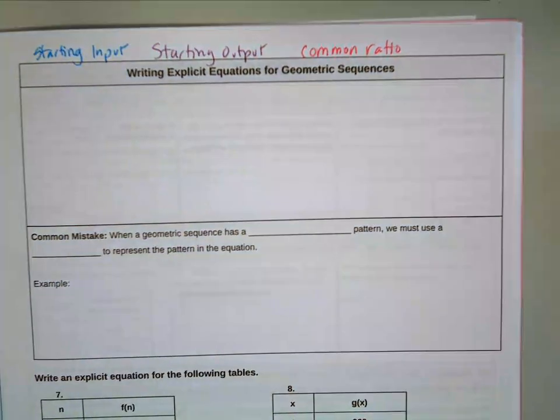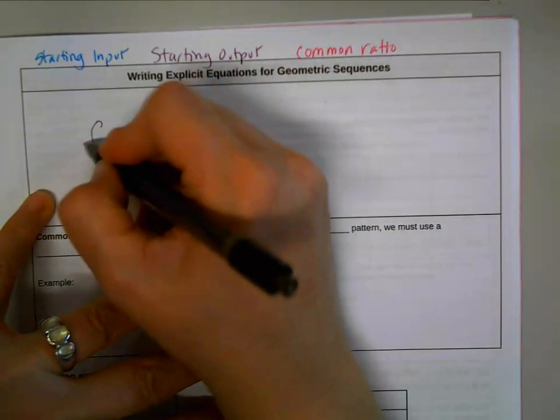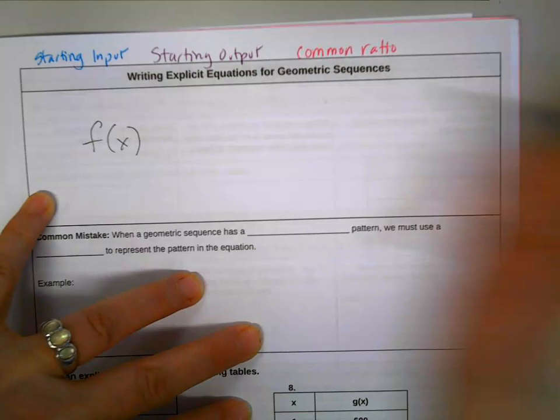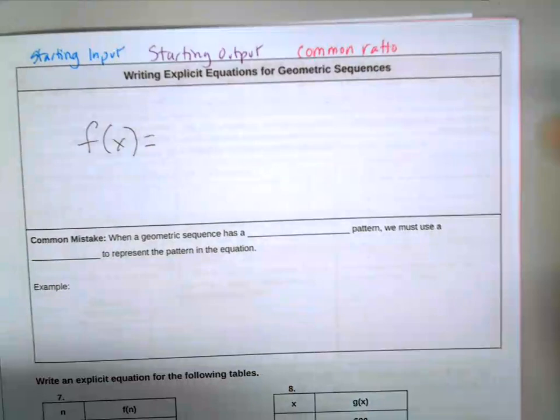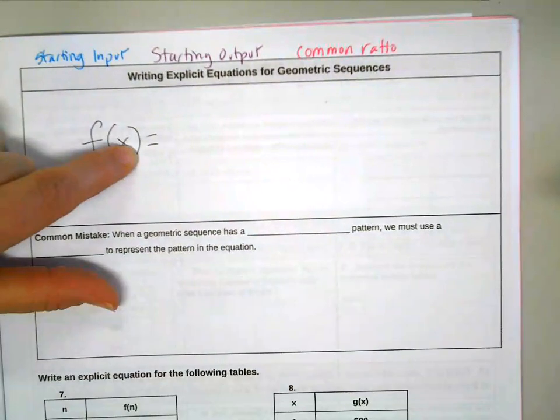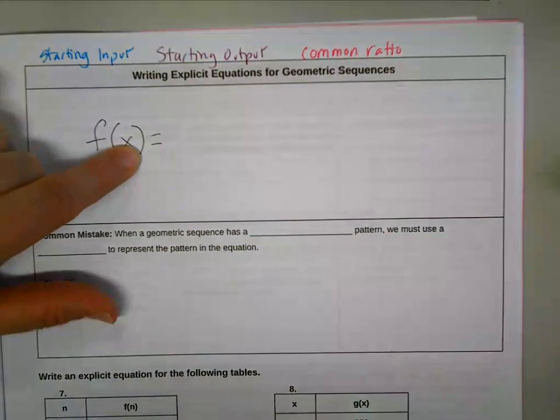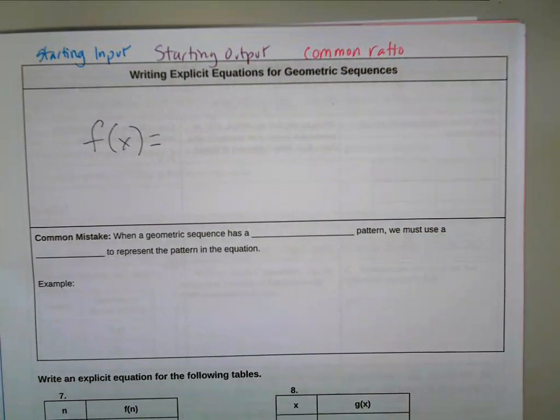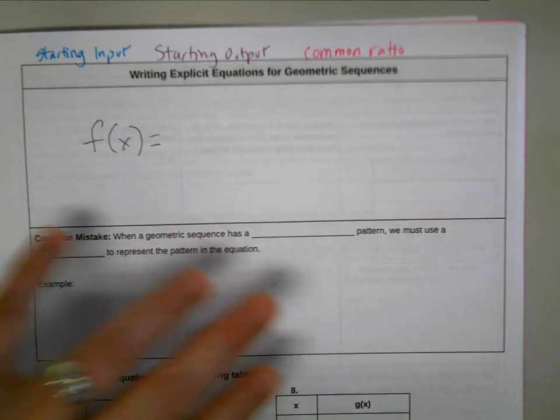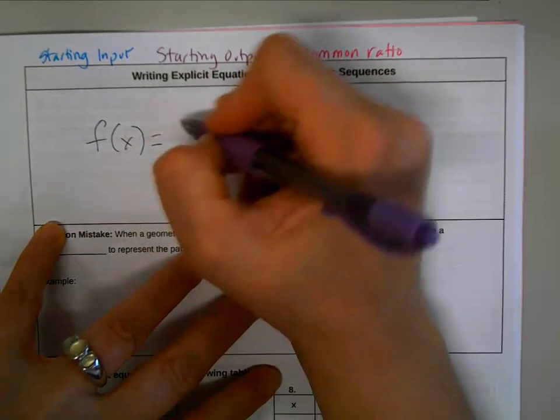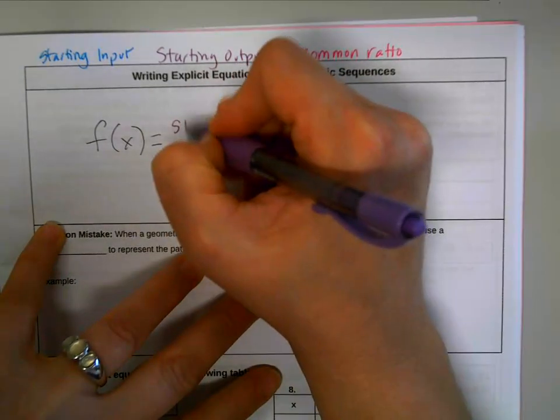We're still going to name our functions f of x or g of n or whatever. That's just the name of the function and which variable we're using for our inputs. But we always start with the value that we had, our starting output, which is the other word for our starting value. So we are going to put that first, starting output.